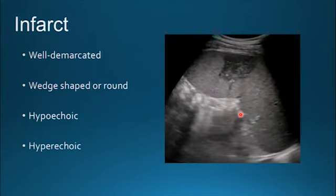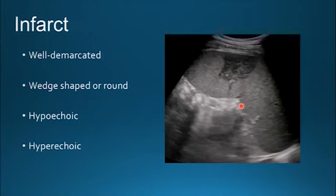Infarcts of the spleen are generally well-demarcated with a wedge shape or may be round in nature. They can be hypoechoic and can be caused by leukemia, lymphoma, or other infiltrative processes.